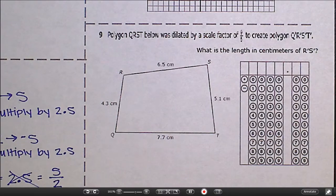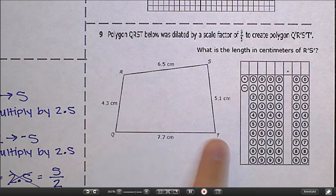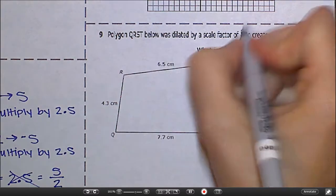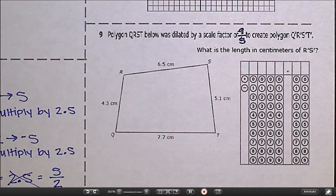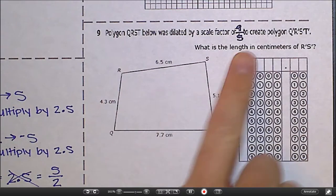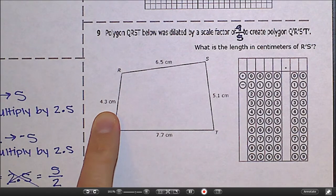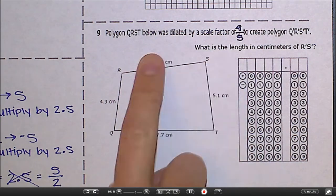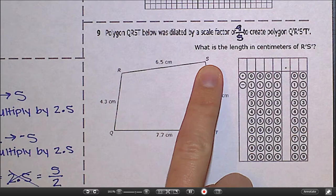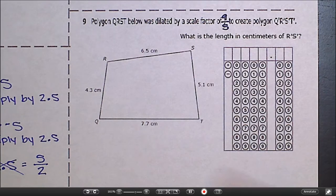Okay, number nine, I'm going to just help you get started on. First of all, it's kind of hard to read some of this, so let's read it together. Polygon QRST below was dilated by a scale factor of 9/5. So let's write that in where we can read it easily: 9/5. To create polygon Q prime, R prime, S prime, T prime. So we're going to be multiplying each side by 9/5 to get the new side. What is the length in centimeters of R prime S prime? So all we really care about is this side right here. They've given us a lot of extra information, but it's not asking us for the perimeter. It's not asking us for all four sides. It's just asking us for this one. So I'm going to leave this to you.